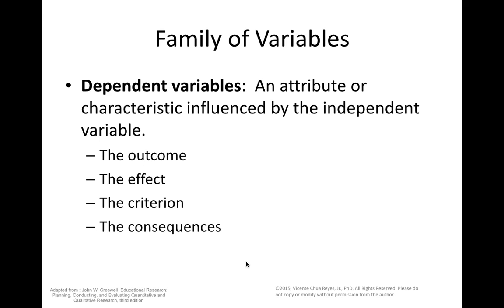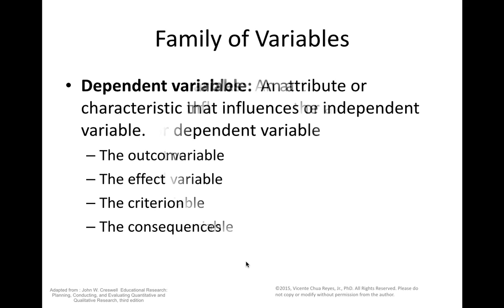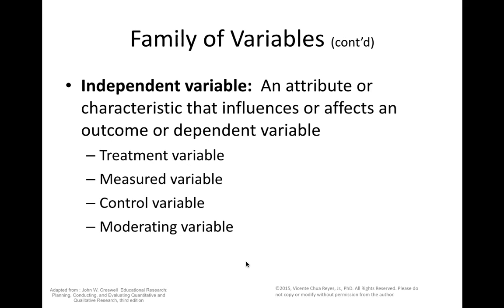A dependent variable is an attribute or characteristic influenced by the independent variable. It can also be called the outcome, the effect, the criterion, or the consequences. An independent variable is an attribute or characteristic that influences or affects an outcome or dependent variable. The various independent variables could be treatment, measured, control, and moderating variables.